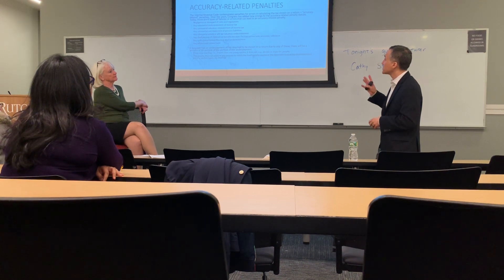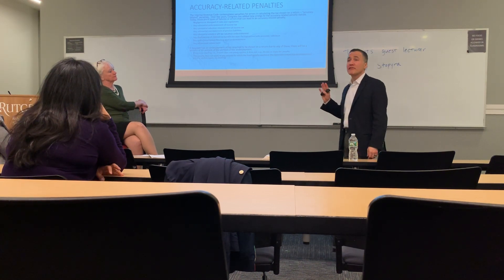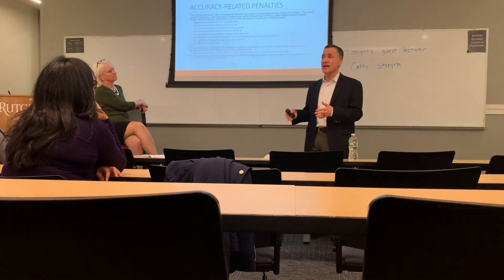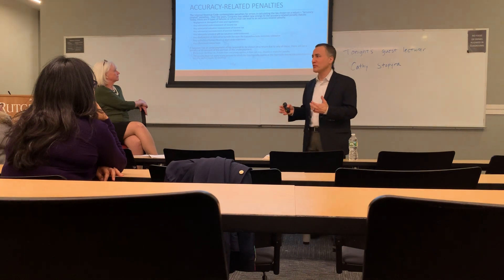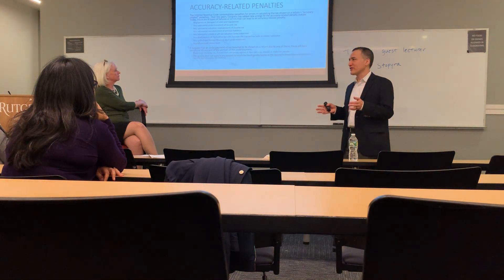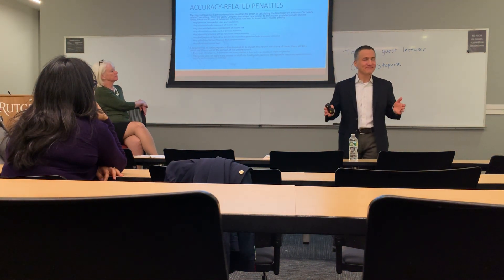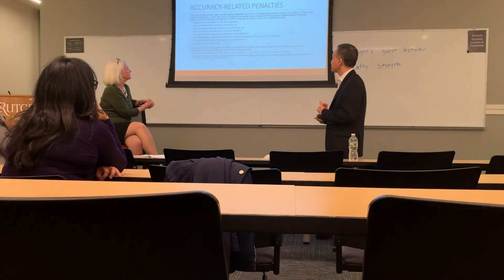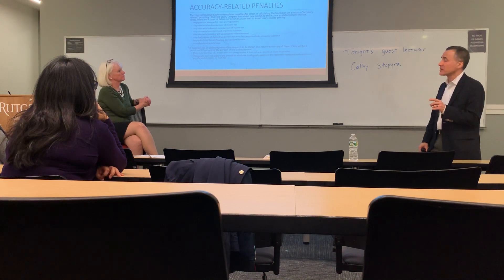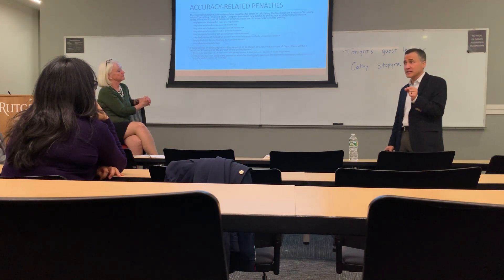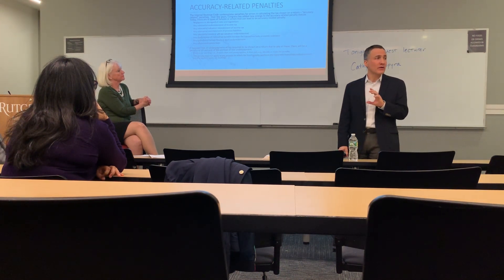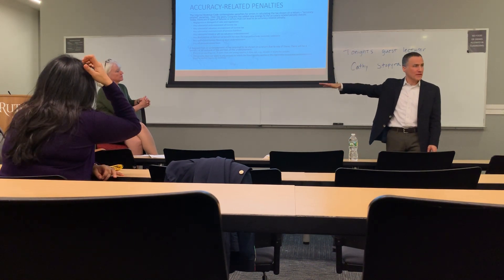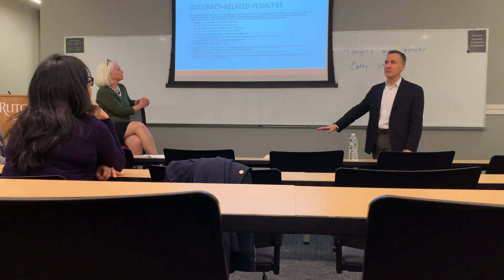In the hierarchy: fraud takes precedence, then reportable transaction understatement, then accuracy-related penalties. If a reportable transaction understatement penalty applies, that takes precedence over the accuracy-related penalty. We'll talk about that later. The book only has seven prongs — I follow the statute. Some of these are brand new, like the inconsistent estate basis penalty.